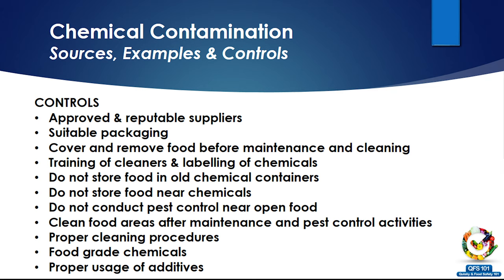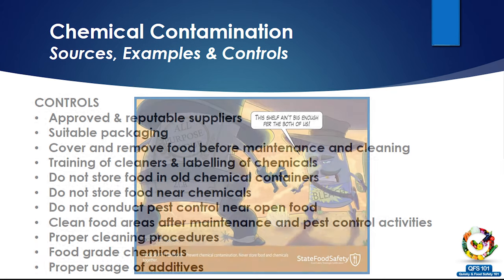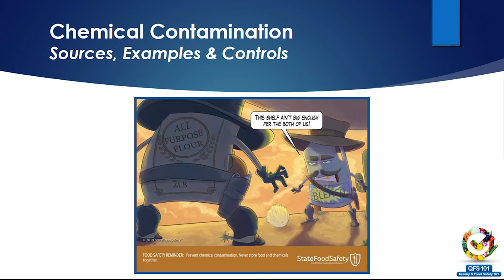Some logical controls: cover food as much as possible, do not clean or do maintenance during open food times, remove food before pest control activities. After every cleaning and pest control activity, there should be proper washing so the food environment becomes free of chemical contamination before production starts. And of course, do not store chemicals alongside food — there should be segregated storage of chemicals and food.